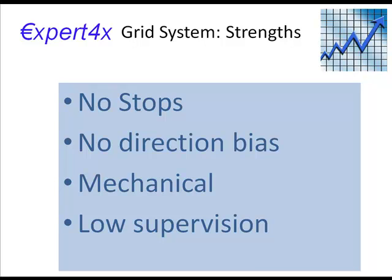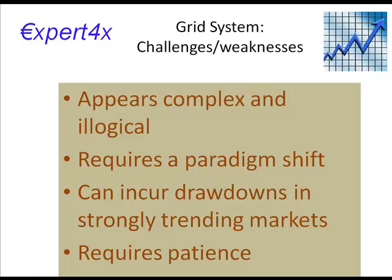The strengths of the system are no stops, no directional bias, mechanical operation, and very low supervision. The weaknesses are that it appears complex and illogical at first — it breaks all the normal trading rules. For instance, one rule is 'let your winners run and cash in your losers quickly.' This system does the opposite — it cashes in winners immediately. It can incur drawdowns if used in a strongly trending market with inappropriate currencies or grid sizes, and it requires considerable patience as transactions can take more than a week.